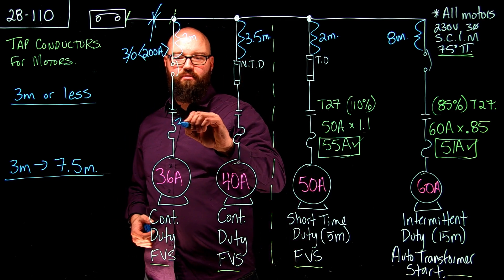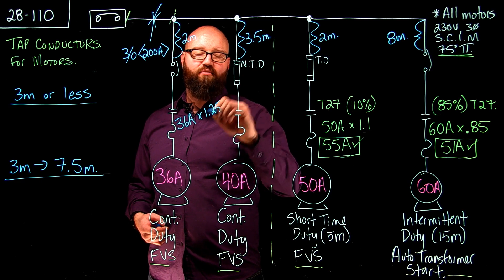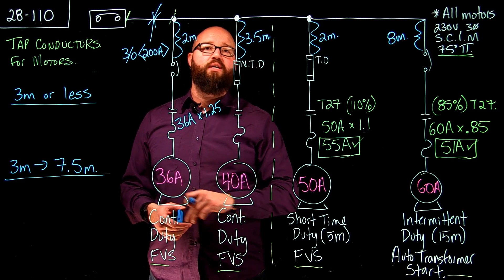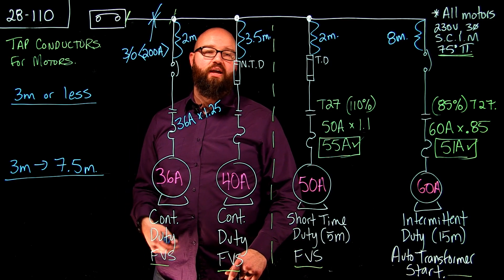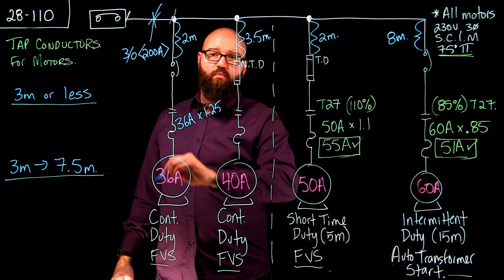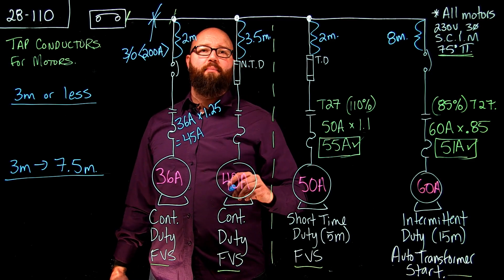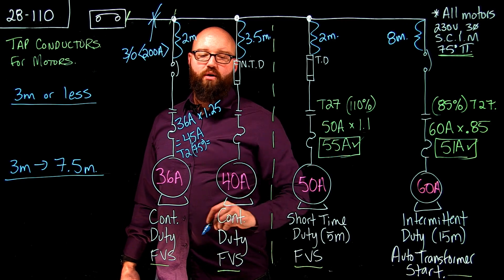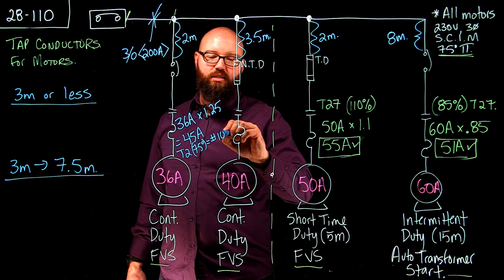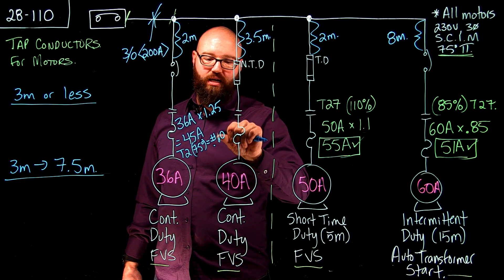So again 28110 tells me for under 3 meters long I'm allowed to apply just the branch circuit to this calculation. So 36 amps and I'm going to multiply it by 1.25 because according to 28106 for continuous duty rated motors I'm going to apply 125 percent to the FLA. That's my minimum ampacity. We should see 45 amps is our minimum ampacity which when we go table 2, 75 degree column we are going to pick ourselves a number 10 gauge that or sorry not a number 10 gauge rather a number 8 gauge.